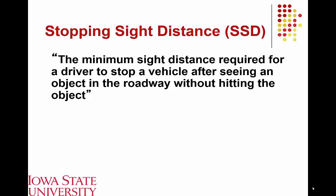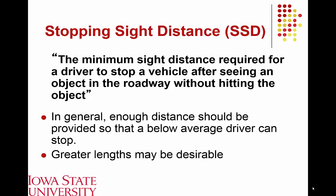Essentially, a driver needs to identify an object in the road ahead, make the determination to stop, and then go through the actual physical process of stopping prior to striking the object. We want to ensure sufficient distance so that a below-average driver can stop. If we design for the average driver, half of drivers would end up striking the object. We generally design to accommodate 85 to 95 percent of drivers, with greater lengths being desirable if possible.